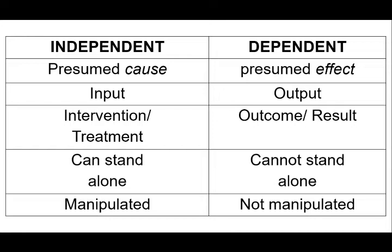For example, for gender, we usually manipulate the gender by dividing them according to male and female and see the results on the dependent variable, whether it changes or there is a significant difference.